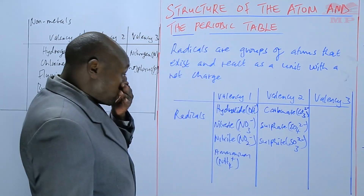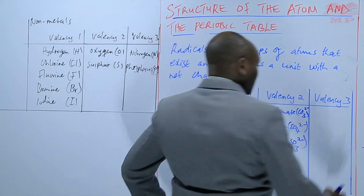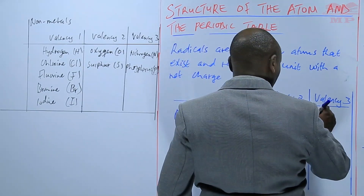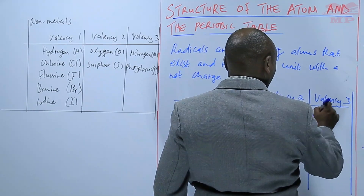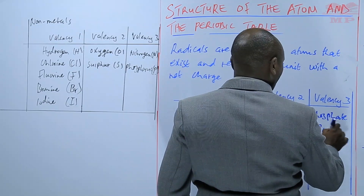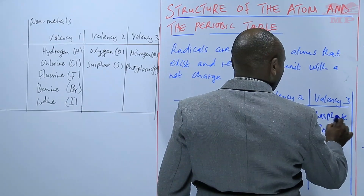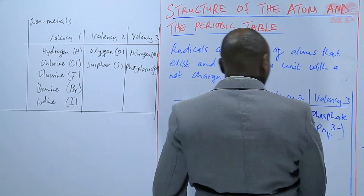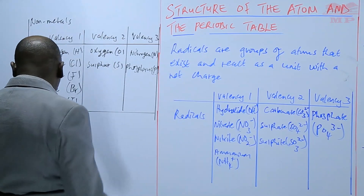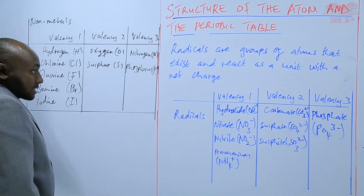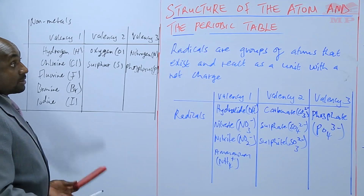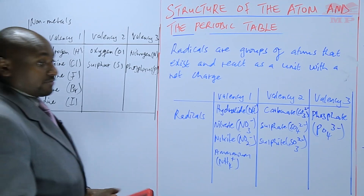For radicals with a valency of 3, we have phosphate (PO₄³⁻), and so on. Those are the common radicals. So basically, that covers valencies.